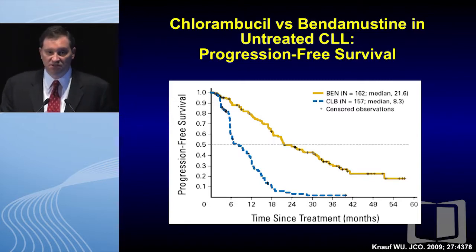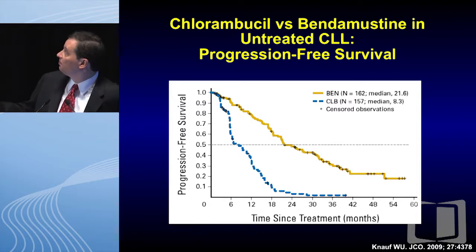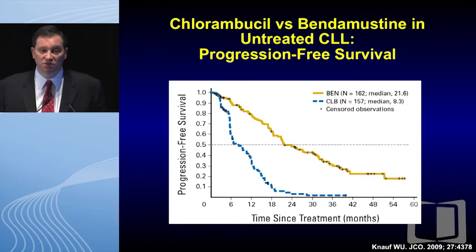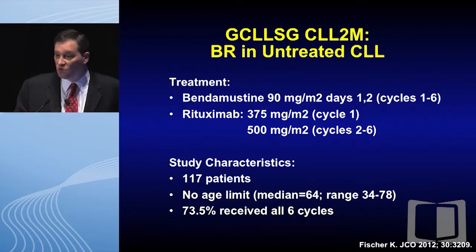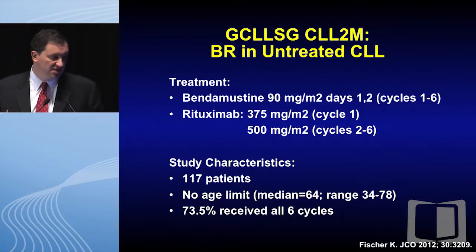Now let's look at bendamustine in its pivotal study in untreated CLL patients compared to chlorambucil. Bendamustine had a median progression-free survival of only 21.6 months. So in a very rigorously done modern-day clinical trial, the median progression-free survival of bendamustine by itself is actually shorter than fludarabine by itself, and far shorter than the combination of fludarabine plus rituximab.